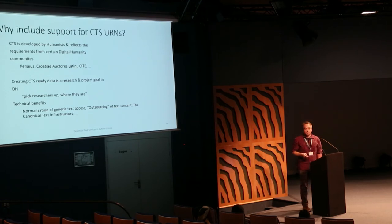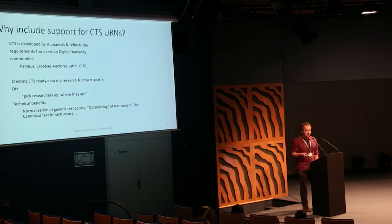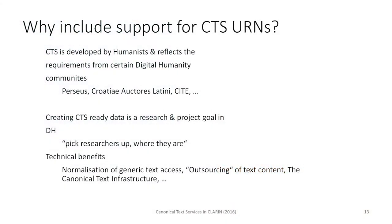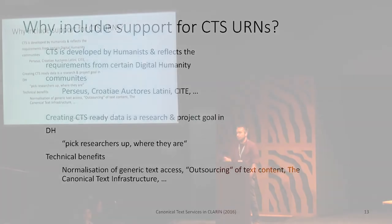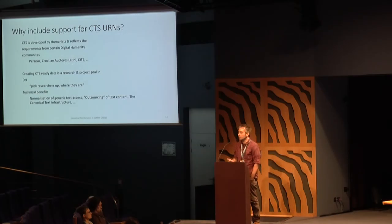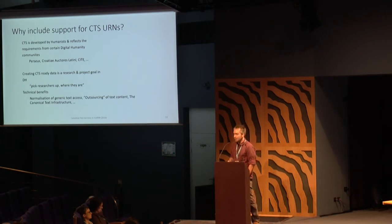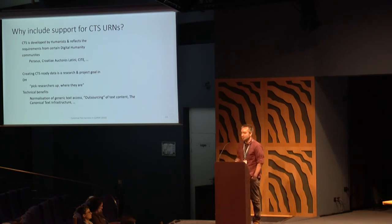There are also some technical benefits. Creating an interface to canonical text service is a way of normalizing generic text access. It allows you to outsource the text data — you don't need to store the chapters or anything like this. You can just store the CTS URN and request the chapter data as needed. And it's also a way to connect to the canonical text infrastructure, which will be the issue for the rest of the presentation.